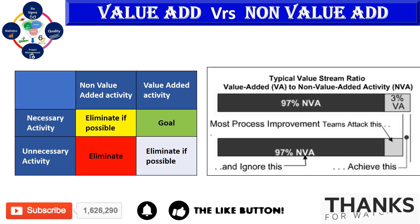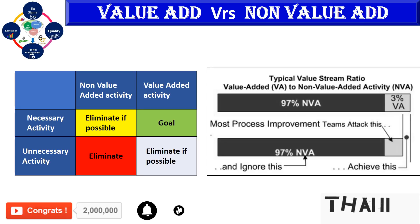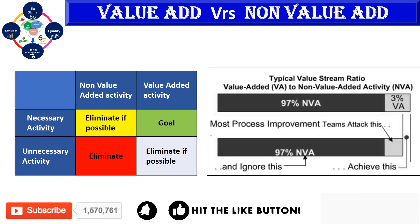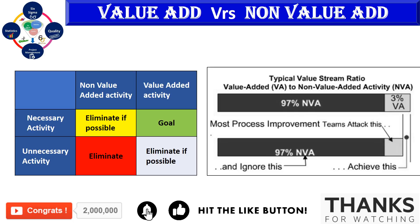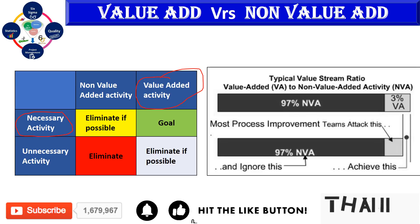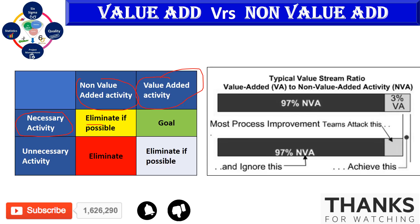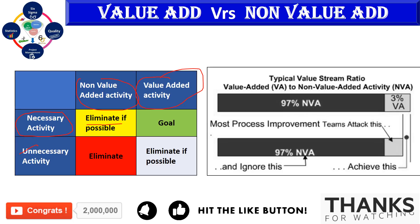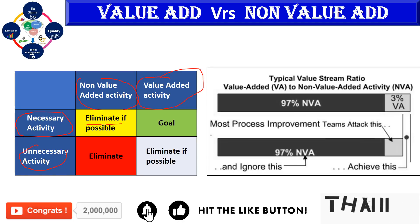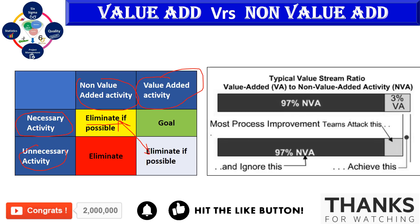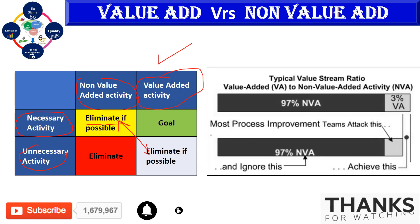We have categorized activities into four quadrants based on whether they are value-added or non-value-added, and necessary or unnecessary. Our goal is to be in the green zone: activities that are both value-added and necessary. Activities that are necessary but non-value-added should be eliminated if possible. Activities that are unnecessary and non-value-added should be eliminated first. Our ultimate goal is to retain only value-added and necessary activities.